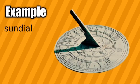The sundial is an instrument of the past age which is used to measure the time of the day. This instrument uses sunlight and makes a shadow. This shadow moves with the passage of time, with the help of which we can measure the time.